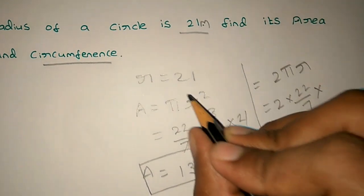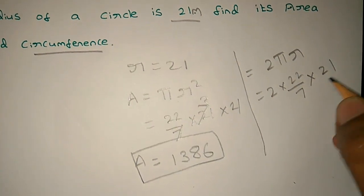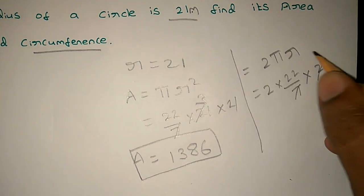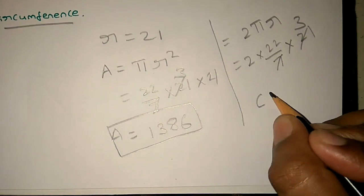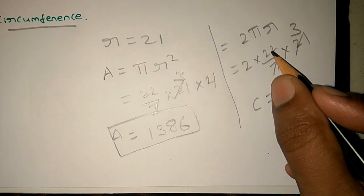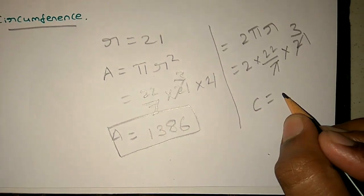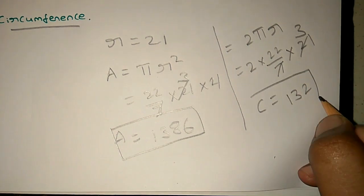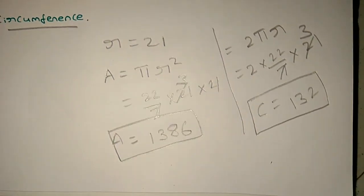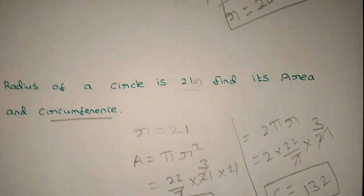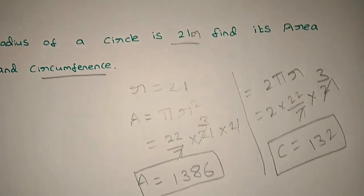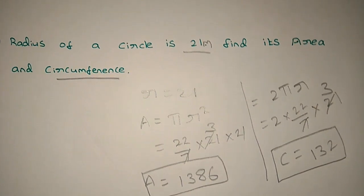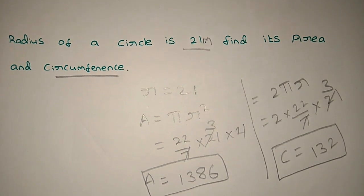So we solve this and get the circumference equals 132. These are our basic formulas. Whenever we have the basic items, we get the basic strong fundamentals, so we can solve more complex problems.